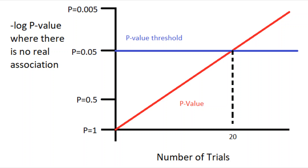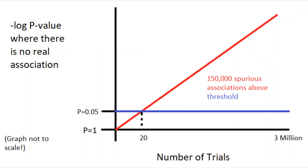For genome-wide association studies, however, this threshold is far too lenient. The reason that p ≤ 0.05 had been acceptable historically in genetics, but is not acceptable in modern genomics, is that genome-wide association studies carry out way more than 20 tests.